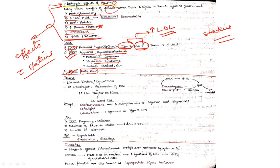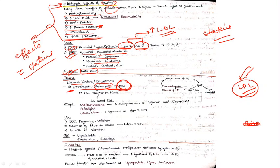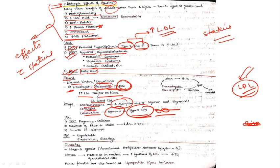The next group is resins, also called bile acid binders. They inhibit enterohepatic reabsorption of bile. If bile is not reabsorbed, the liver needs to resynthesize bile, requiring LDL cholesterol from blood, increasing LDL receptors on liver and decreasing blood LDL. Drugs in this group include cholestyramine, colestipol, and colesevelam. Colesevelam is also approved for type 2 diabetes mellitus treatment.